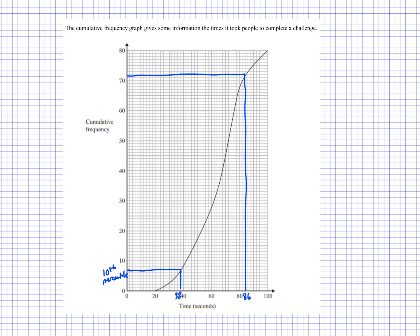So the 10th percentile is 38 seconds. The 90th percentile is 86 seconds. And the interpercentile range between the 10th and the 90th percentile would be 86 take away 38. And that's going to give me 48. So 48 seconds for the interpercentile range between the 10th percentile and the 90th percentile.